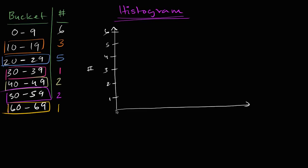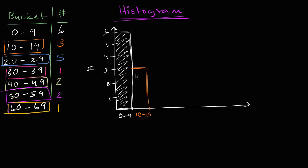So I have one bucket. This is going to be the zero to nine bucket. Zero to nine. Then I'm going to plot them. So in zero to nine, there are six people. So I'll just plot it like that. And then we have the 10 to 19. There are three people. So 10 to 19, there are three people. So I'll do a bar like this. Then 20 to 29, I have five people. There's five people.